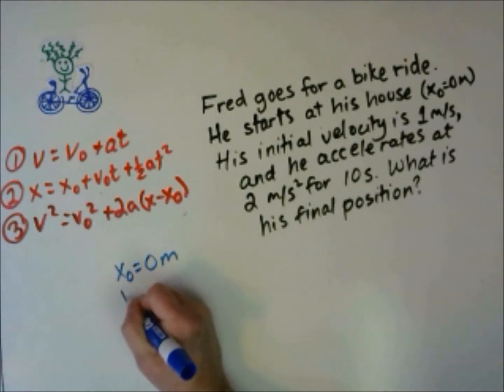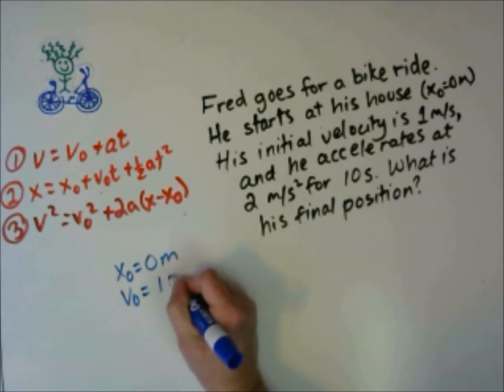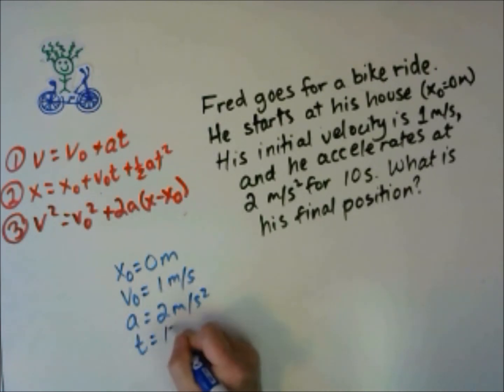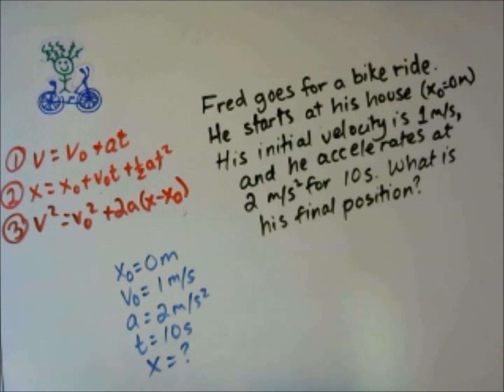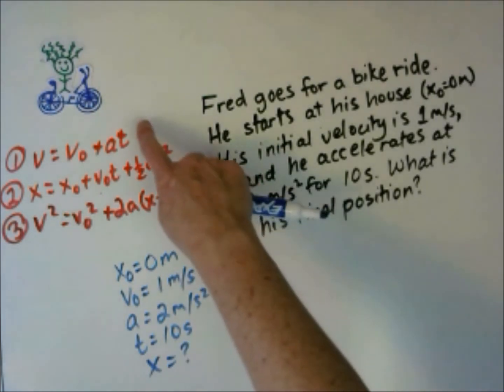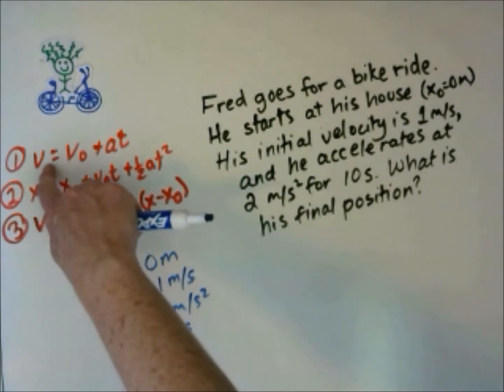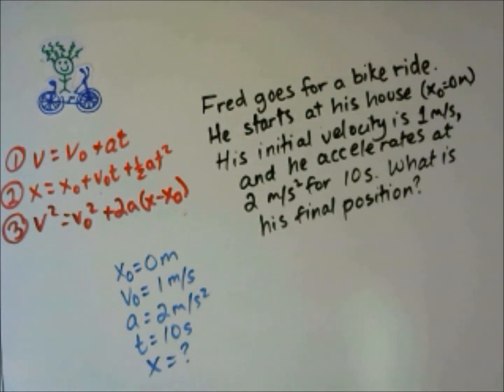He starts at x0 equals 0. His initial velocity is 1 meter per second. He accelerates at 2 meters per second squared for 10 seconds. We want to know final position. Which of these equations includes all of these variables? The 4 we know and the 1 we want to know.